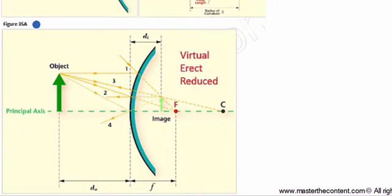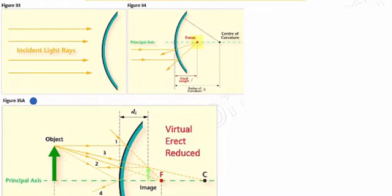Moving on, for image formation, convex mirrors follow the same rules that we introduced for concave mirrors in figure 21 a few slides back. However, the focal point for a convex mirror is on the opposite side of the mirror and is sometimes referred to as the virtual focal point.